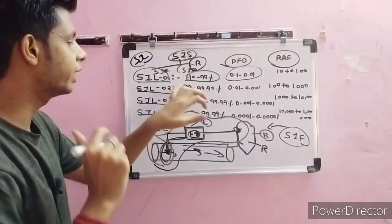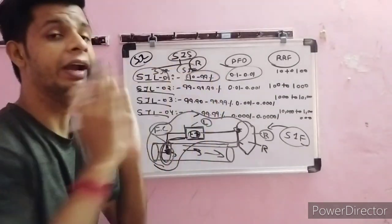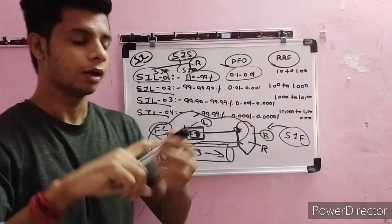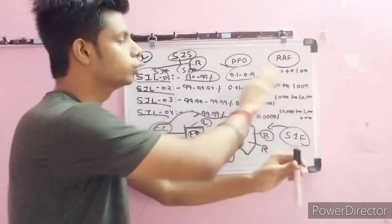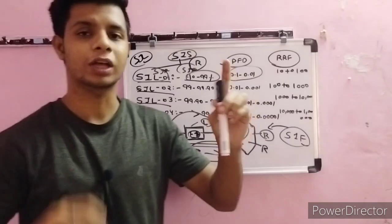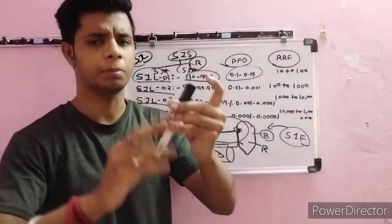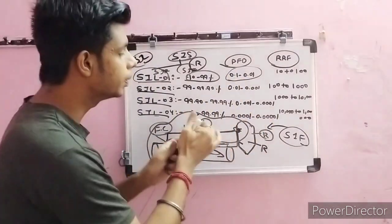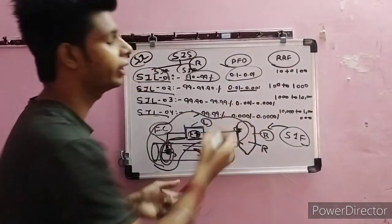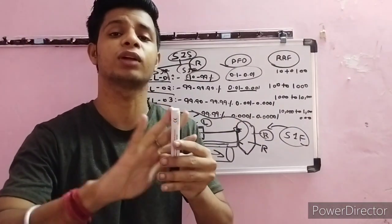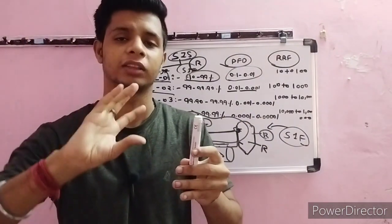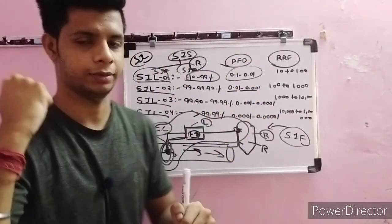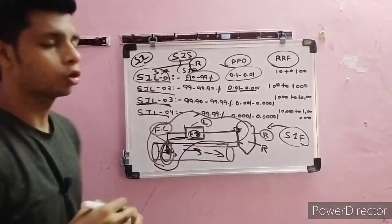For SIL 2, reliability is 99 to 99.9%. If a valve is performing open-close cycles one thousand times continuously, the probability of failure on demand is 0.01 to 0.001% — meaning there is only a 0.001% chance of failure out of one thousand operations.